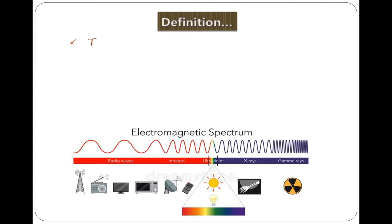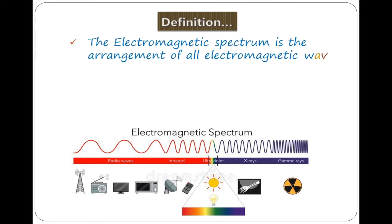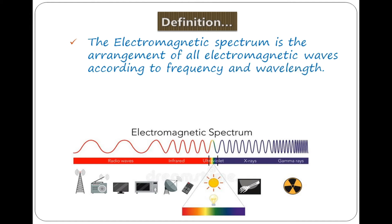Let's make the first definition: what is the electromagnetic spectrum? The electromagnetic spectrum is the arrangement of all electromagnetic waves according to frequency and wavelength. In Physics Form 2, on the topic of waves, we said that waves can be categorized broadly into two categories — electromagnetic waves and mechanical waves. Mechanical waves require a material medium for transmission, while electromagnetic waves do not.